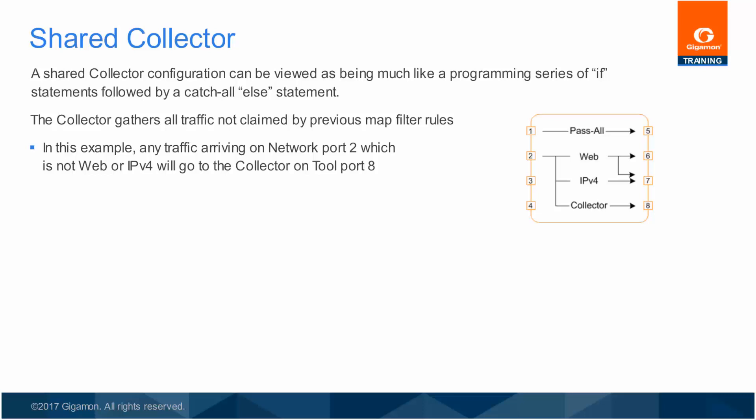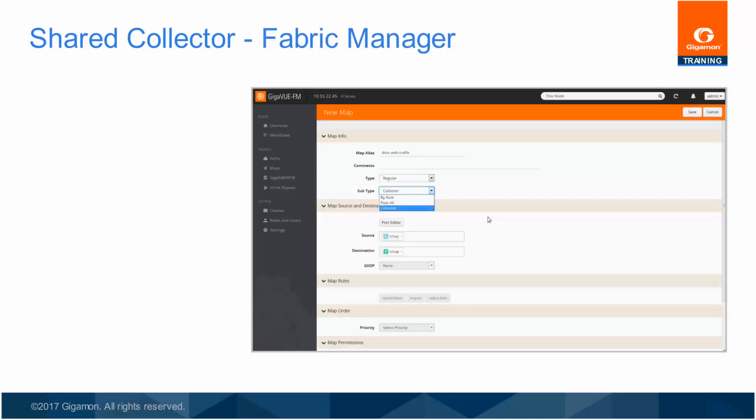As a special use case, a shared collector can be the only mapping applied to a network ingress port, which then acts much like a pass-all mapping, but permits additional rules to be added later. You will now configure a shared collector map using the Fabric Manager web interface.